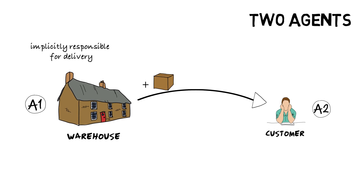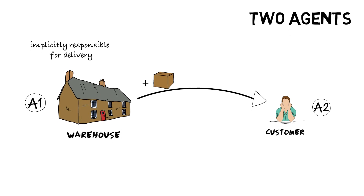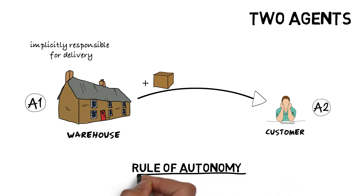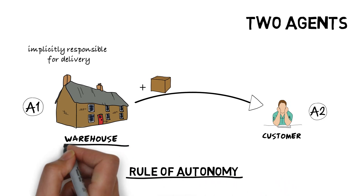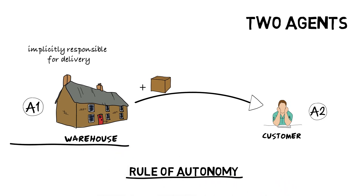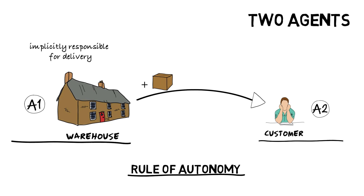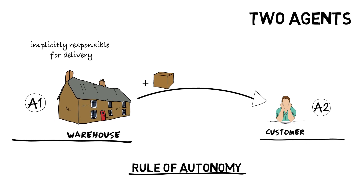The rule of agent autonomy now throws us a surprise. Because the first agent can't promise anything on behalf of the second, the promise to provide the package doesn't imply any intent or promise to accept it by the second agent. So for the package to be delivered, another promise has to be made by the recipient — a promise to accept the package.